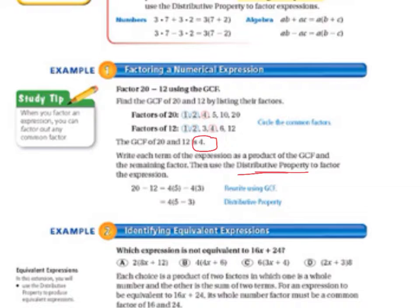When we make it look like it does with the distributive property, it's 4 on the outside of parentheses times 5 minus 3 on the inside of the parentheses. Now, let's take a look at our study tip to the left. It says, when you factor an expression, you can factor out any common factor. We're using the greatest common factor, but you can factor out any common factor.